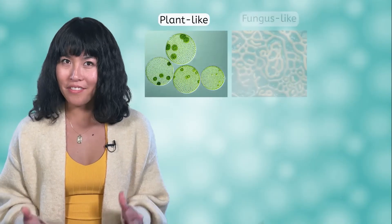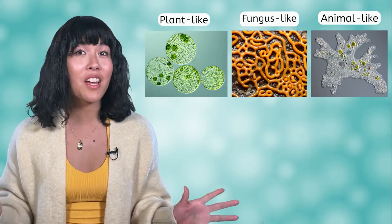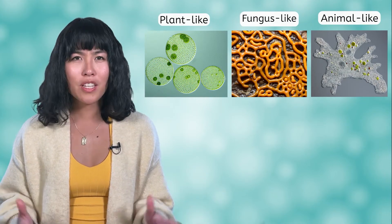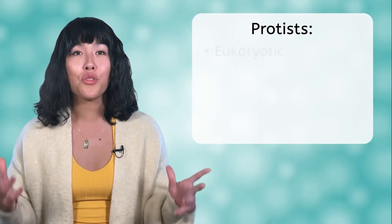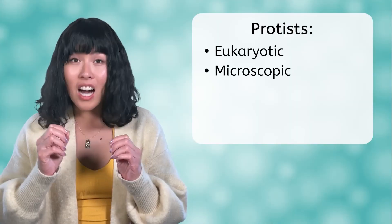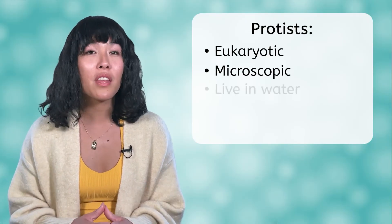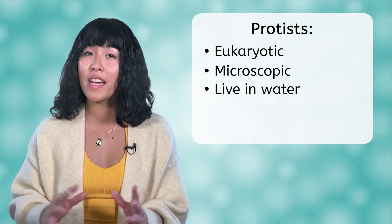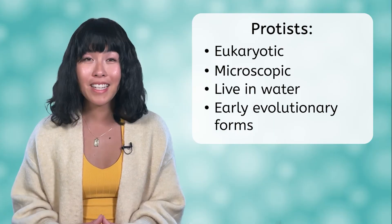As we went through the lesson today, we looked at the three main groups of protists: plant-like, fungus-like, and animal-like. These species are as different as they are alike, which leads many scientists to question their grouping into a single kingdom. What characteristics do they share? They're all made of eukaryotic cells, they're all microscopic unless they join with other cells to make large colonies, most live in water or very wet environments, and they all likely represent the early evolutionary forms of their related kingdoms.